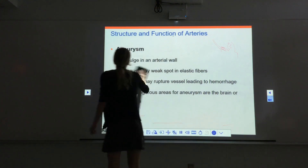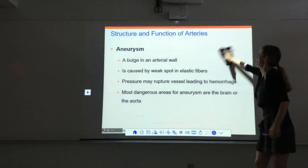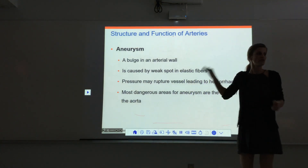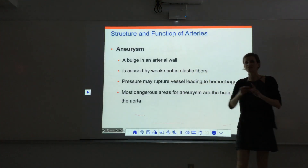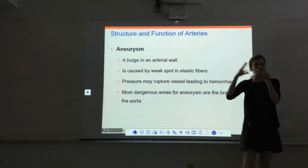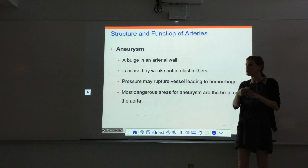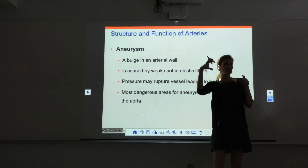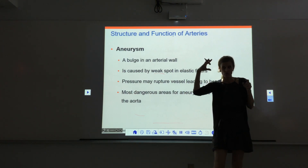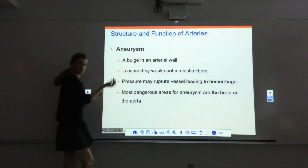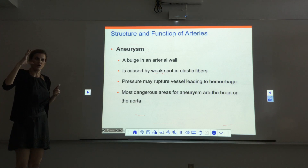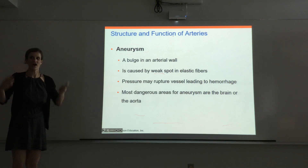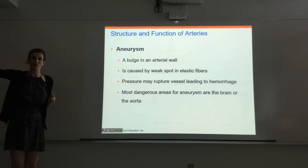Arteries are muscular and elastic. That elasticity is super important — just like your waistband. If there's a problem with the elastic fibers, if there's damage or not enough elastic fibers in part of an artery, it creates a weak spot. It can start to bulge because of the pressure — it doesn't stretch there anymore, so the pressure pushes the wall out. That bulge can burst or rupture. That's an aneurysm — a bulge in an artery wall.